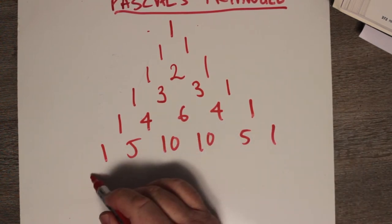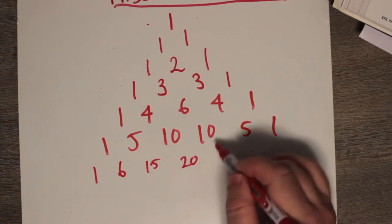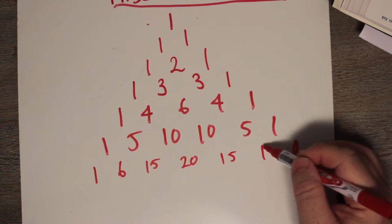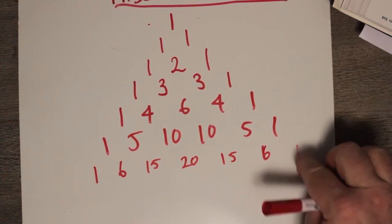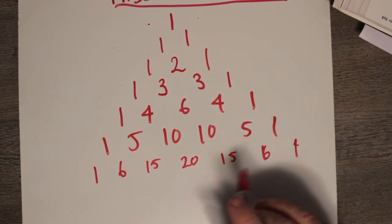And we can keep going, one, six, fifteen, ten and ten is twenty, ten and five is fifteen. Again, five and one is six, and we get one, six, and finally one. Okay. So that's Pascal's triangle.